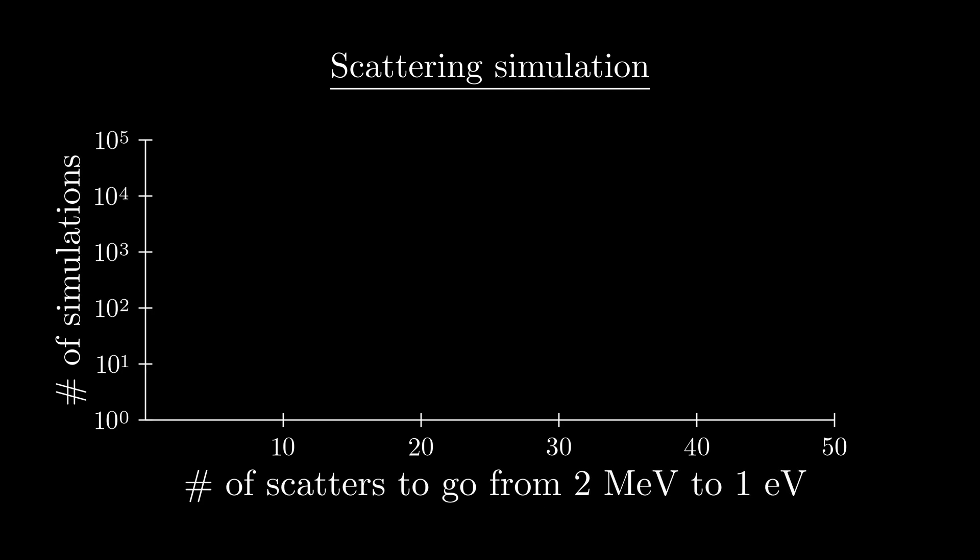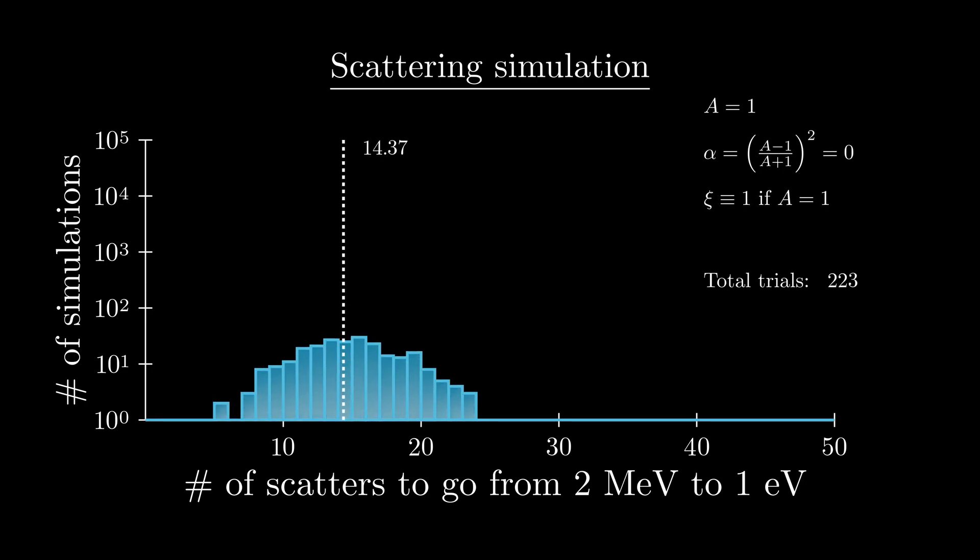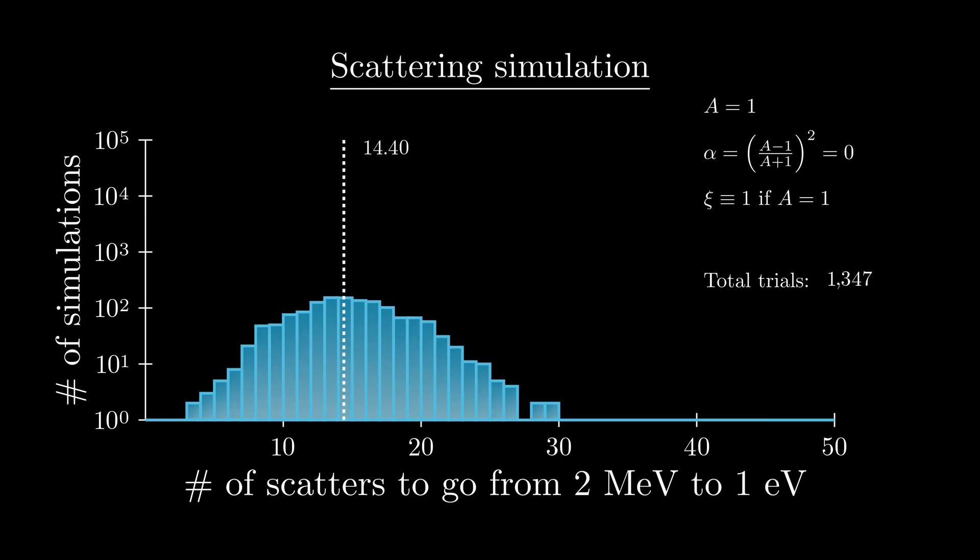For A equals 1, our alpha value is equal to 0, and our average change in lethargy is defined to be 1. So we start to perform our simulations, and we see that the average value for the number of scatters it took to reach 1 eV converges to about 14.47. If we analytically calculate the expected value with our formula from earlier, it comes out to around 14.5. Some neutrons took only a couple of scatters to reach 1 eV, and some took closer to 30, but on average, a neutron scattering in the best possible medium for slowing it down takes only around 14 scatters to reduce its energy by a factor of 2 million.